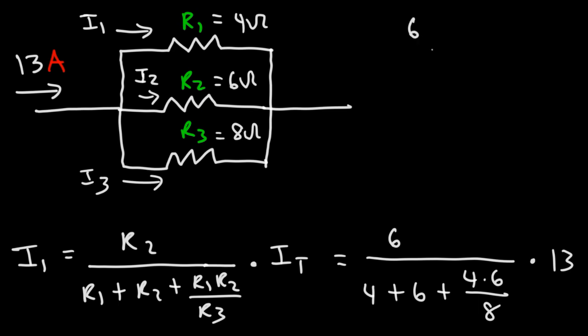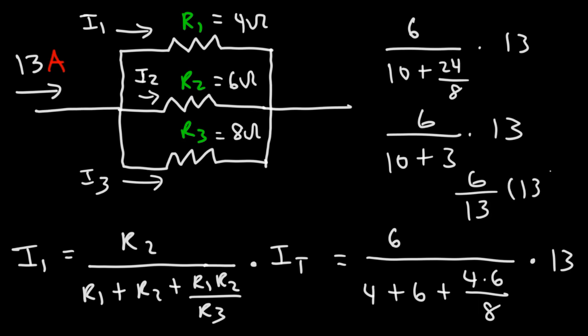So let's do some algebra here. So we have 6, and then 4 plus 6 is 10. 4 times 6 is 24, and 24 divided by 8 is 3. And 10 plus 3 is 13, which will cancel with this 13, giving us a current of 6. So I'm just going to write 6 amps for I1.